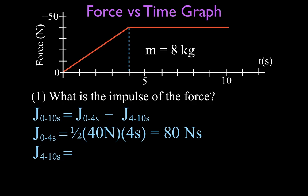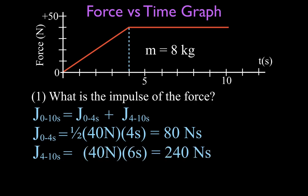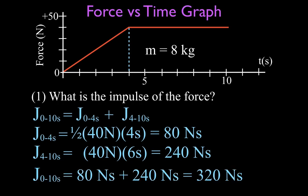The second part, from four to ten seconds, is a rectangle, so it's just base times height. The base is 6 seconds and the height is still 40 newtons. So 40 times 6 is 240 newton-seconds. Adding the two values together: 80 plus 240 is 320 newton-seconds. The impulse of this force over time is 320 newton-seconds — that's the area under the graph.